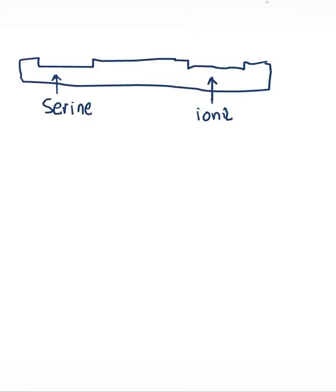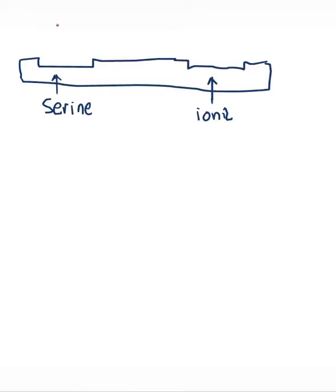When it comes to nerve agent toxicity, I will be using a stereotypical organic phosphorus type agent. There's going to be a central phosphorus molecule. I'm going to have a double bond to an oxygen here, an R2 group, and my R1. And then I have a covalent bond to an oxygen here — normally this is a hydroxyl group, but this has been phosphorylated. This nerve agent is stuck in the serine site, and it has inactivated the entire acetylcholinesterase enzyme.